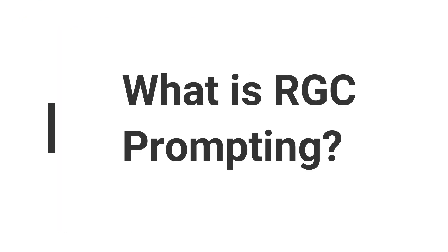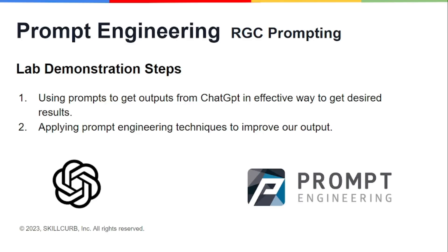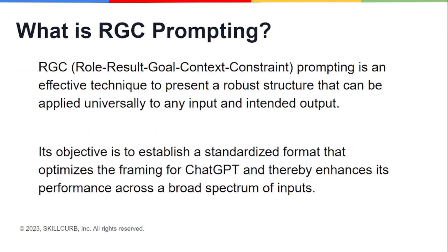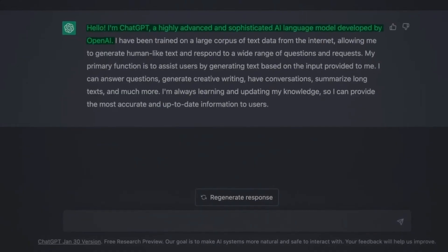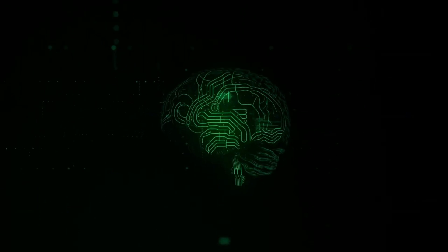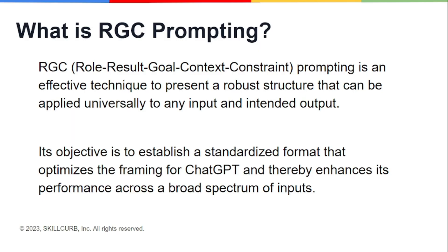Before starting, let me tell you what RRGC means. RRGC prompting stands for Role, Result, Goal, Context, and Constraint prompting. This is a very effective technique to present a robust structure that can be applied universally to any input, with the objective of establishing a standardized format that optimizes the framing for ChatGPT and enhances its performance across a broad spectrum of inputs.